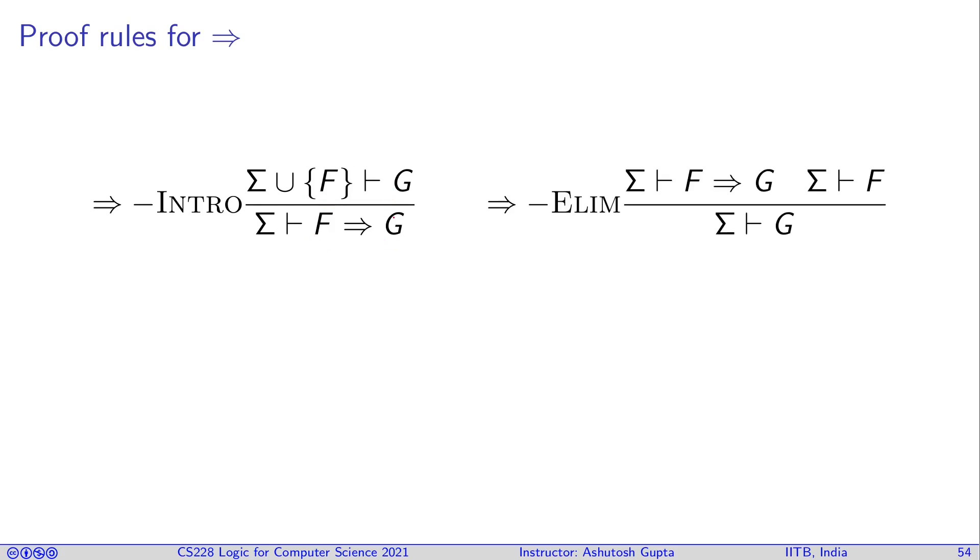Once you have an intro, you need an elim. So, what is the elim? If you have an F implies G and somebody also told you that Σ can prove F, that means Σ can prove G. Means, you know, F is true, put it F here and then left with G.